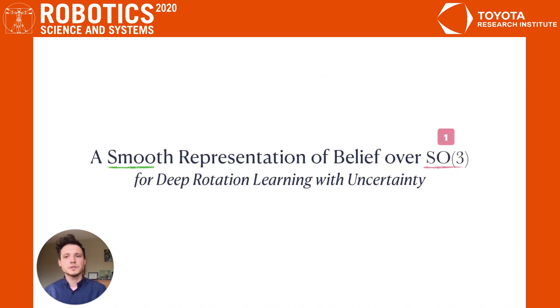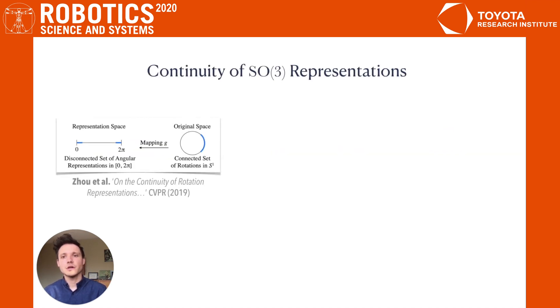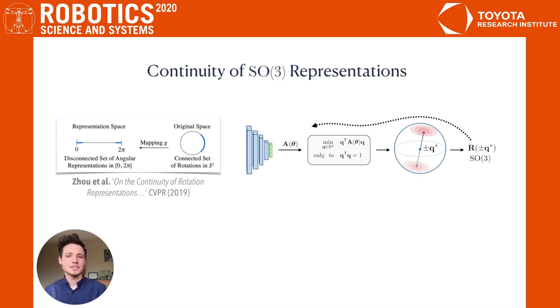Now what does it mean for our representation to be smooth? In a recent paper, Zhou et al showed that the mapping G from SO3 matrices to another representation is important for learning. Namely, if such a mapping, called a section, is continuous, then this facilitates learning of arbitrarily large rotation targets.